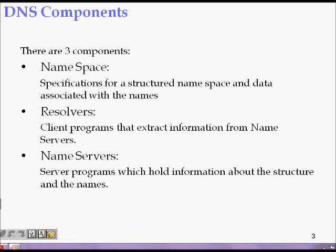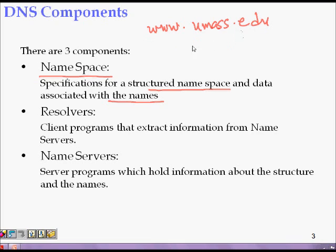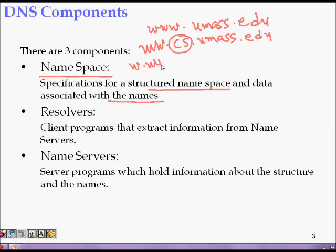Now let's talk about namespace — the specifications for a structured namespace and the data associated with it. For example, we have www.umass.edu, or we can be more specific: www.cs.umass.edu, specifying the CS department at that university. We can go even deeper, such as a research lab like algo.cs.umass.edu.